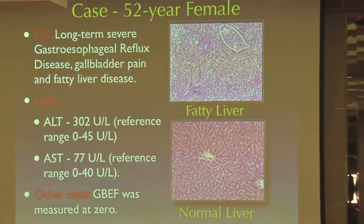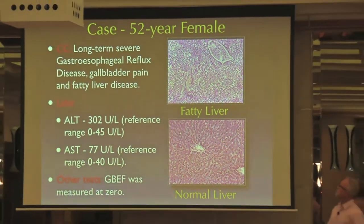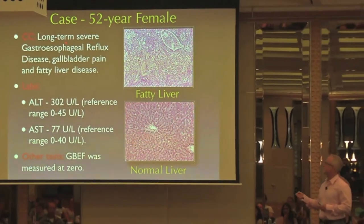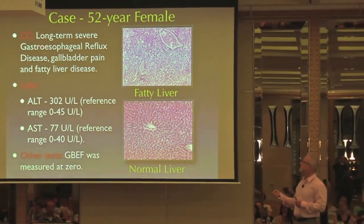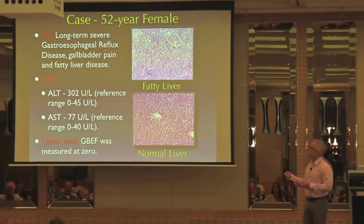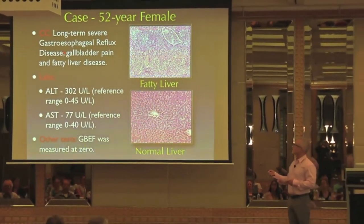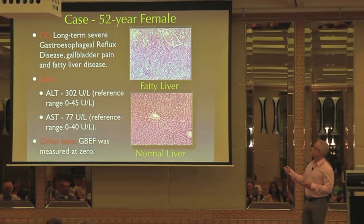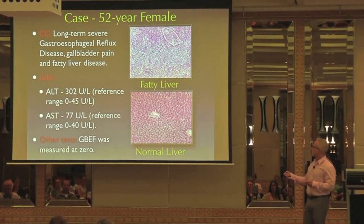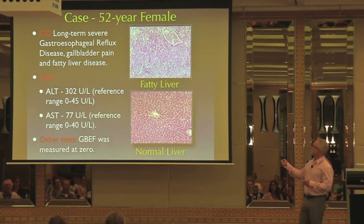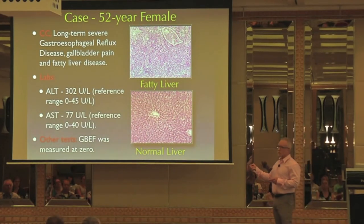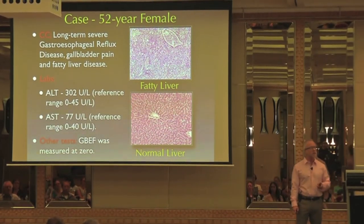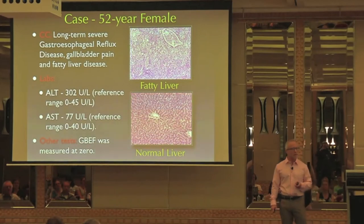This is a case I've been working with. She's a 52-year-old woman. Her chief complaint is long-term severe gastroesophageal reflux disease with gallbladder pain and fatty liver disease. Here's a fatty liver, here's a normal liver. There are a lot of little fat globules around the hepatocytes, which is going to decrease motion of the liver.